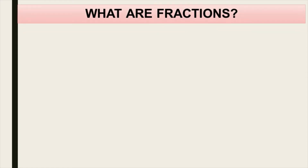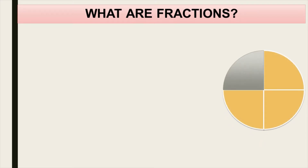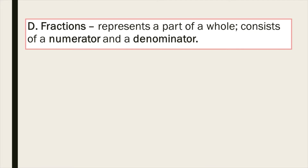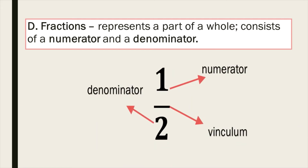Let us now define what a fraction is. A fraction describes part of a whole when the whole is cut into equal parts. This circle has been cut into 4 equal parts, and these equal parts are called fourths. That's why a fourth is written as 1 over 4. The other sections are equal to 3 fourths, written as 3 over 4. A fraction represents a part of a whole; it consists of a numerator and a denominator. A fraction is written in the form a over b, where a and b are whole numbers but b cannot be zero. The number on top, a, is called the numerator. The number below, b, is called the denominator. The line separating the two numbers is called the vinculum.